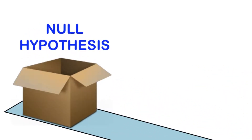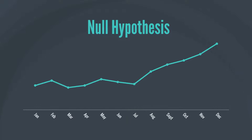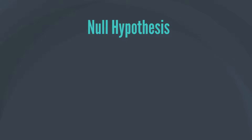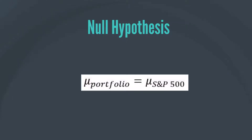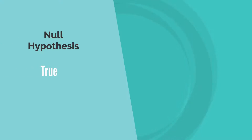The null hypothesis is the claim to be tested — this is the default or generally accepted value of a parameter. For example, it is generally accepted that no portfolio can beat the market portfolio or S&P 500 index. So if you want to test the claim of a portfolio manager that her portfolio generates higher return than S&P 500 returns, we can formulate the following null hypothesis: mu portfolio equals mu S&P 500. The null hypothesis is denoted by H with 0 as subscript. To reflect the widely accepted viewpoint that no portfolio can beat the market, we state the null hypothesis as the mean annual return on the portfolio is equal to the mean annual return on the S&P 500 index. The null hypothesis is considered true unless the sample we use to conduct the hypothesis test gives convincing evidence that the null hypothesis is false.